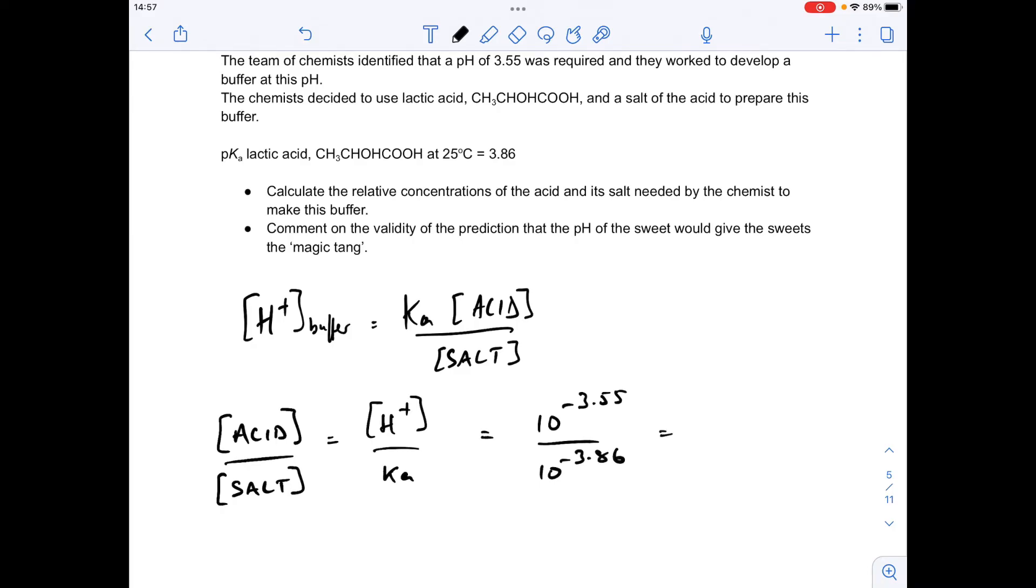If you put those numbers in your calculator, you'll get an answer of 2, which means the ratio needs to be 2 to 1. So in other words, your acid needs to be double the concentration of the salt.